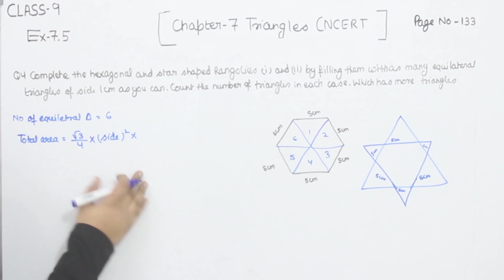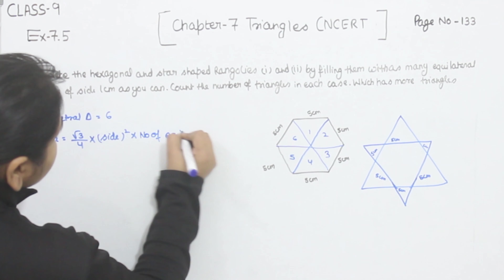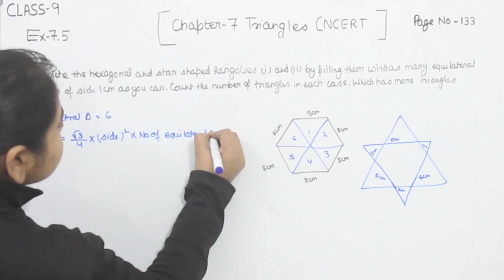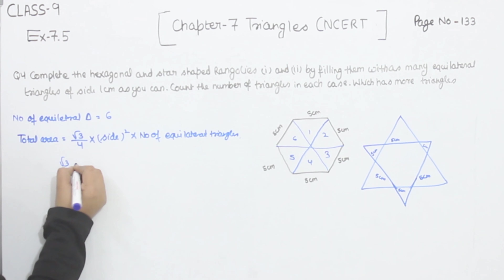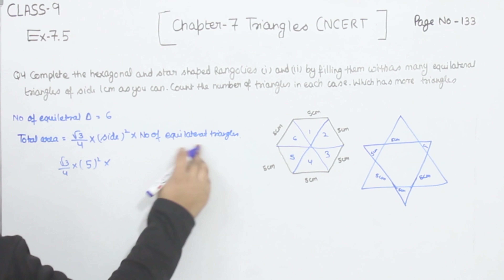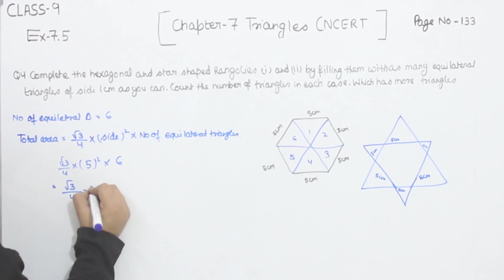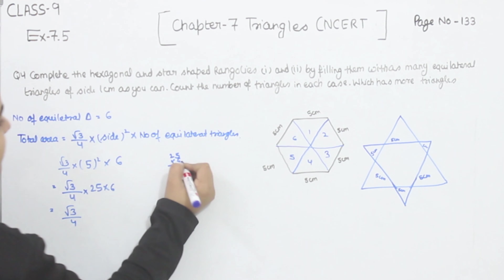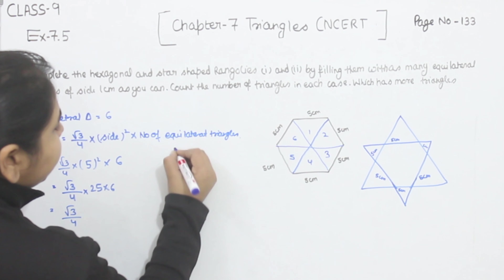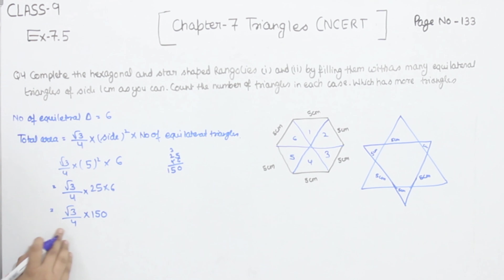Now we are going to find out the area. Total area equals root 3 by 4 multiplied by side squared multiplied by the number of equilateral triangles. Here the side is 5 centimeters and the number of triangles is six. So root 3 by 4 × 25 × 6 = root 3 by 4 × 150. So the area of the hexagonal shape is 150 root 3 by 4.